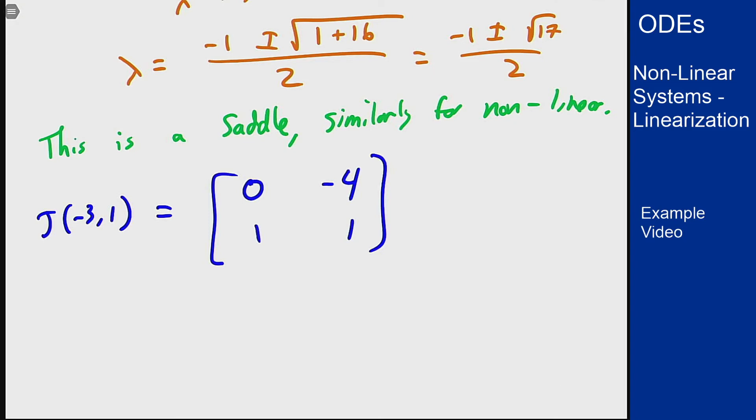We can do the same thing here to find the eigenvalues. We will see 0 minus lambda, 1 minus lambda plus 4, lambda squared minus lambda plus 4.